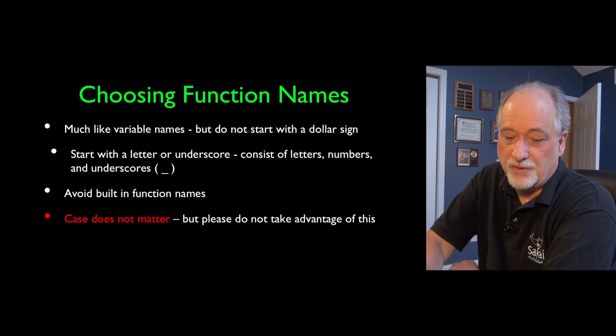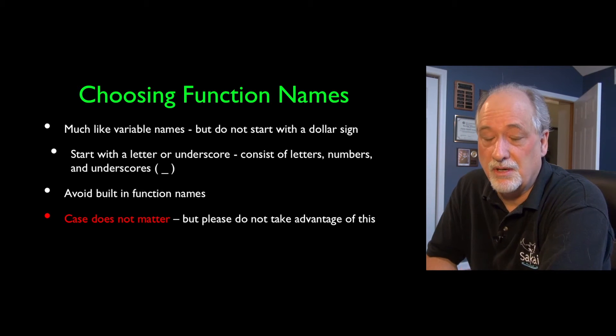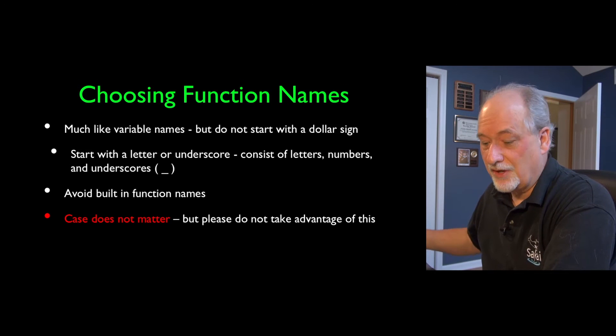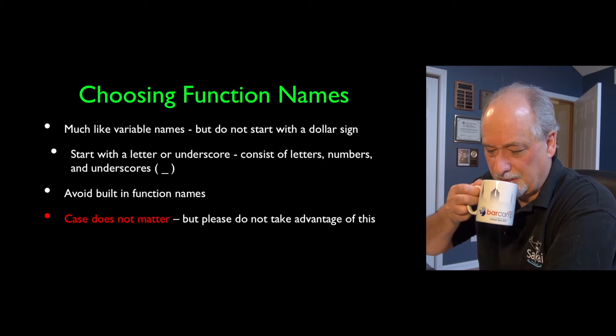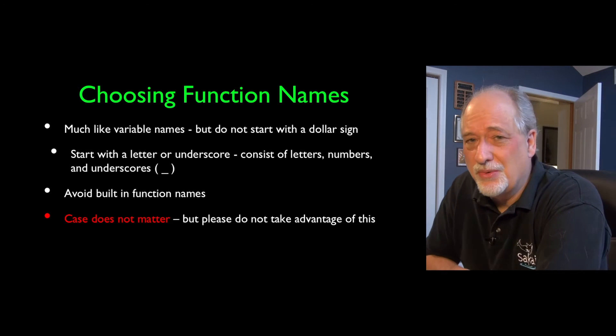Function names are very similar to variable names. You can't start them with a dollar sign, so that means letters or underscores. And then the rest of it can be letters, numbers, or underscores. You don't want to define your own function that overlaps an existing function, so be careful about that.